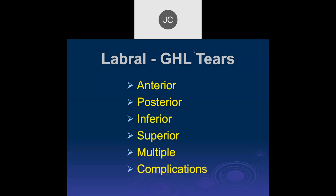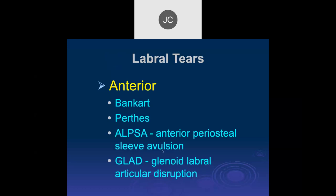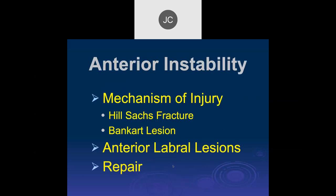We're going to continue talking about labral tears — anterior, posterior, inferior, superior, multiple, and complications. Starting with anterior injuries: there are Bankart tears, which can be soft tissue Bankart tears (a tear of the labrum) or bony Bankart lesions. We'll also talk about Perthes lesions, ALPSA lesions, and GLAD lesions anteriorly. Anterior instability is the mechanism of injury.